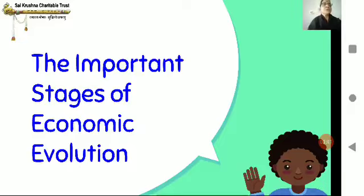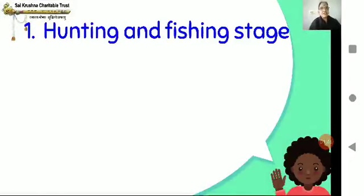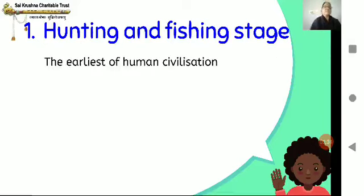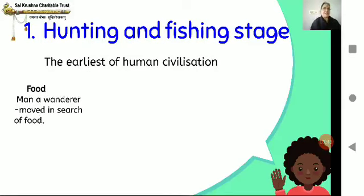The first stage is the hunting and fishing stage. In the earliest of civilizations, man was a wanderer — a person who moves from place to place in search of food. From being a quadruped, he became a biped, used to walk on all fours, then realized he could stand straight. He grew from that stage to what he is today. What was his lifestyle then? What was his food, clothing, and shelter?